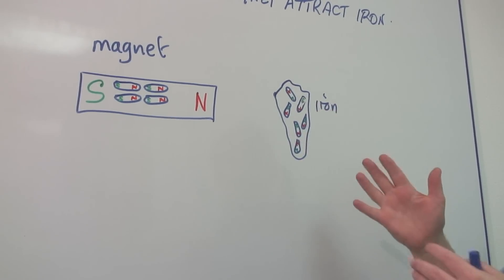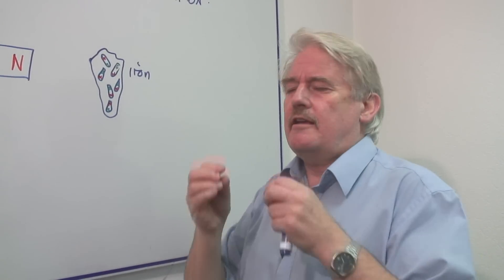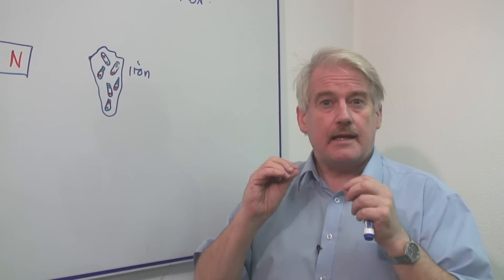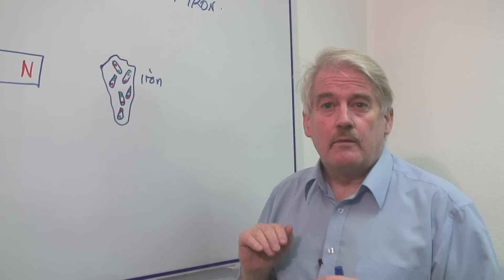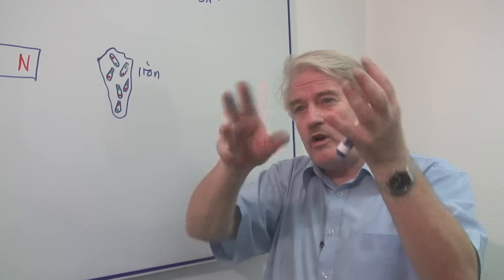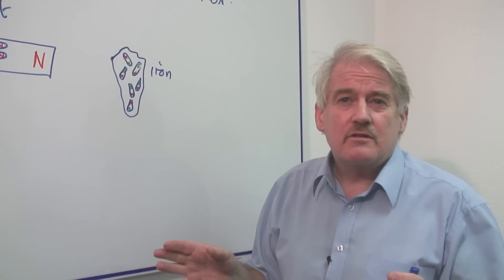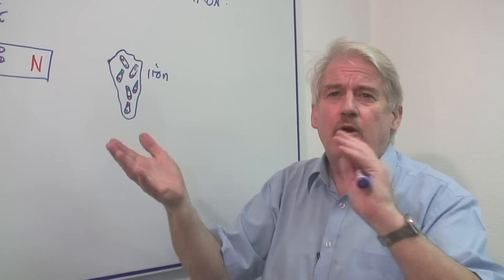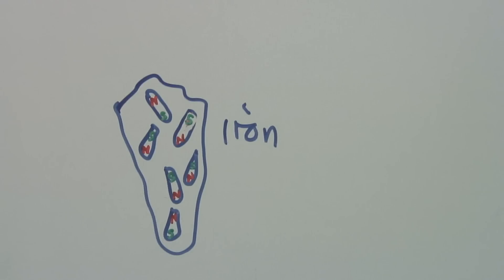Inside iron there are lots of little magnets. Every atom is a magnet and it has a north and a south pole. But in the normal way of things, these are all arranged any old way. So they all cancel out. There's as many north poles as south poles in any direction. So it isn't, in overall terms, magnetic.